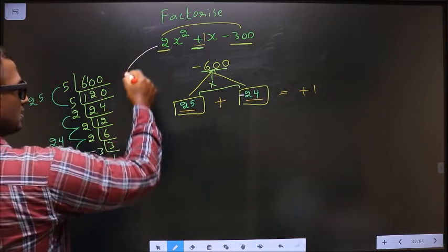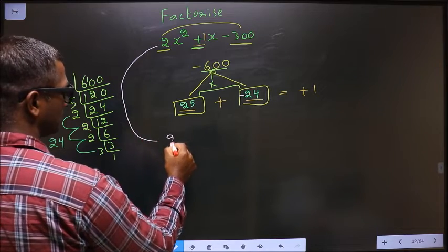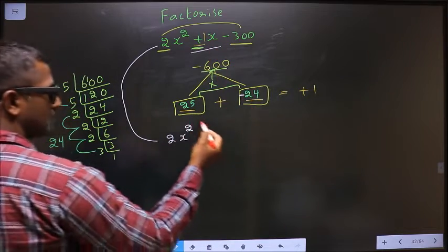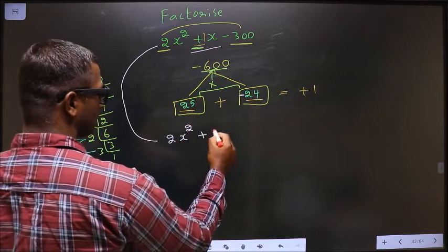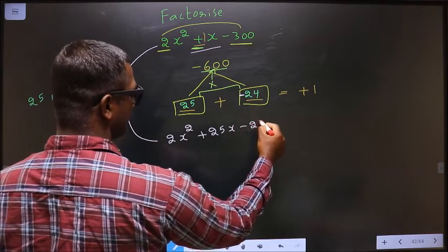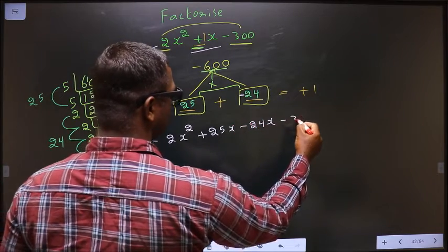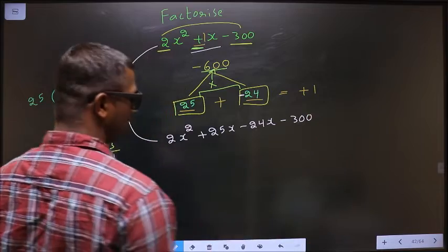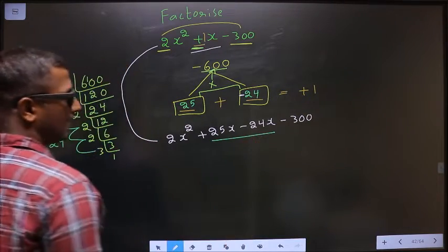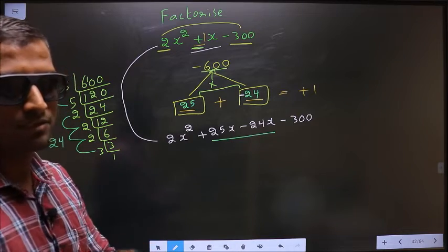Now, rewrite the equation: 2x² + 25x - 24x - 300. In place of +1x, I have written +25x - 24x.